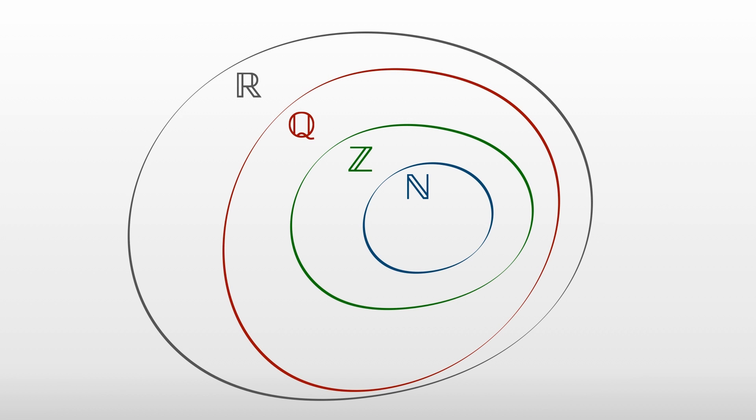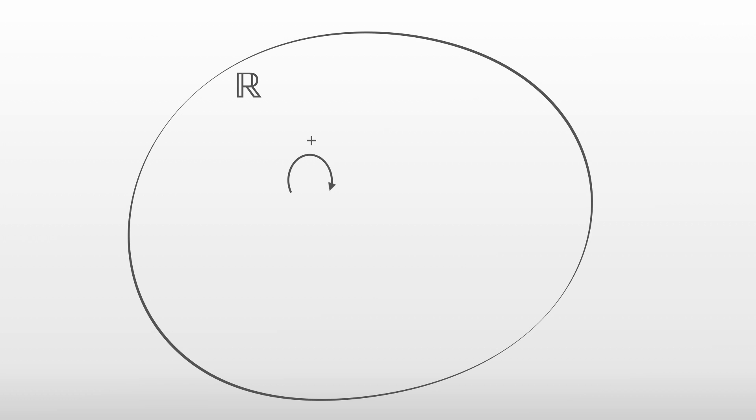Now remember that the natural numbers are closed under addition and multiplication. That is, adding or multiplying any two natural numbers together gives you another, but the natural numbers aren't closed under subtraction because you can end up with a negative integer, and we have a similar situation with the integers which aren't closed under division. Well, when we get to the real numbers we can add, multiply, subtract, and divide all we like, and we always get another real.